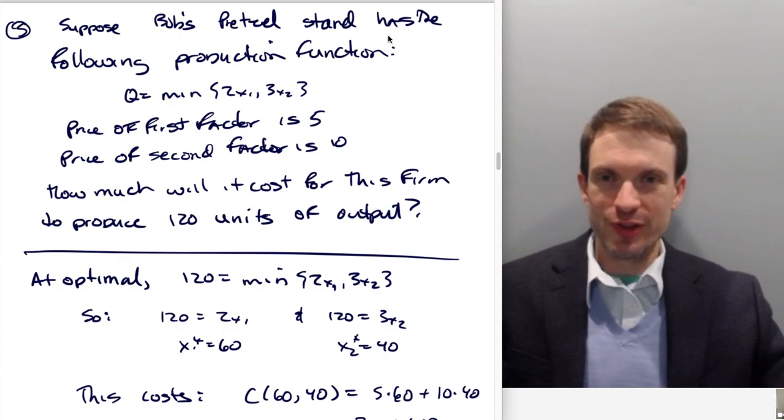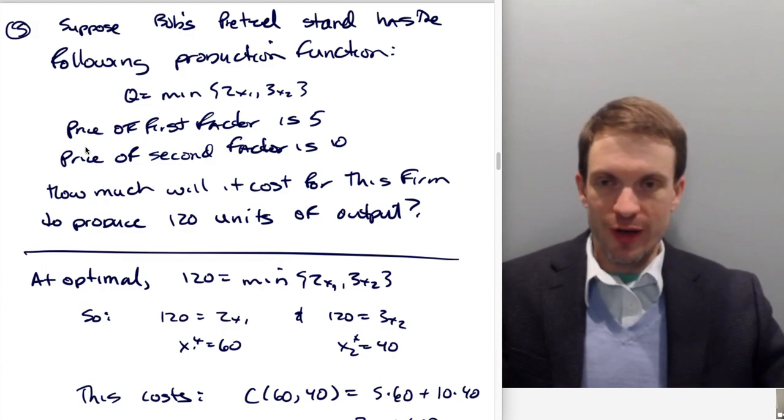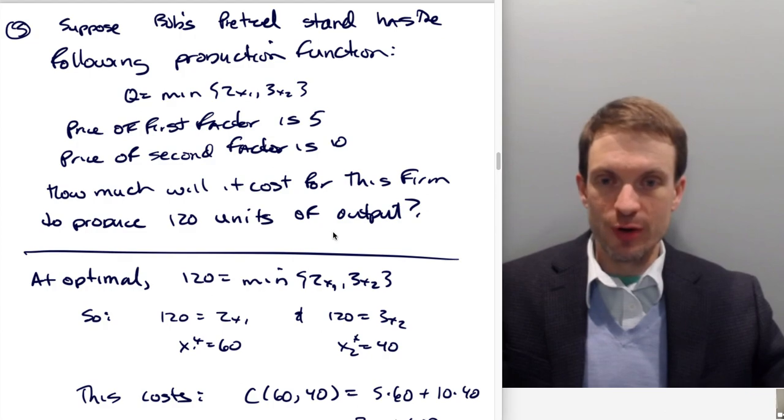So suppose Bob's pretzel stand has the following production function. So q is equal to minimum of 2x1 and 3x2. Suppose the price of the first factor is five, the price of the second factor is 10. How much is it going to cost for this firm for Bob to produce 120 units of output?